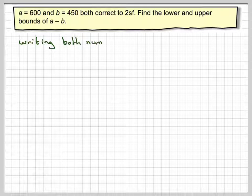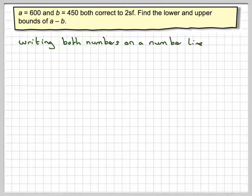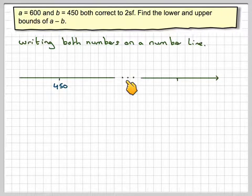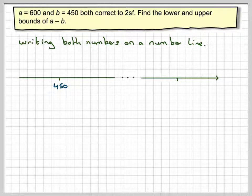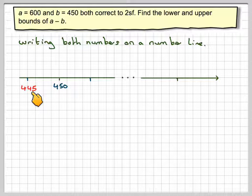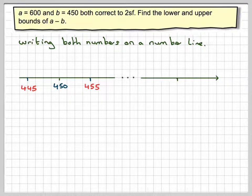So writing both numbers on a number line, we're going to draw a number line. We're going to put a little gap in between the two because it won't be the same scale. For 450, the lower bound to two significant figures is 445, and the upper bound will be 455, so it should look like that.